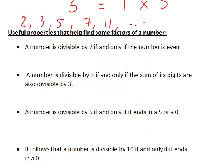It is worth noting a few useful properties that can help find factors. A number is divisible by 2 if and only if the number is even. A number is divisible by 3 if and only if the sum of its digits is also divisible by 3.